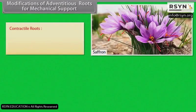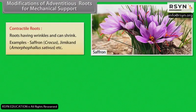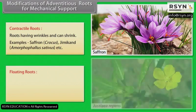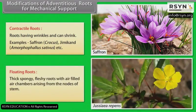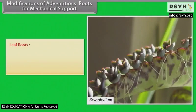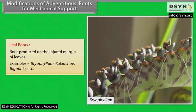Contractile roots: Roots having wrinkles and can shrink. Examples: saffron, Amorphophallus, etc. Floating roots: Thick, spongy, fleshy roots with air-filled air chambers arising from the nodes of stem. Example: Jussiaea repens. Leaf roots: Roots produced on the injured margin of leaves. Examples: Bryophyllum, Bignonia, etc.